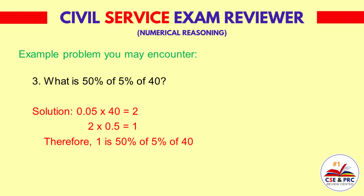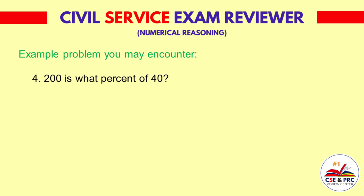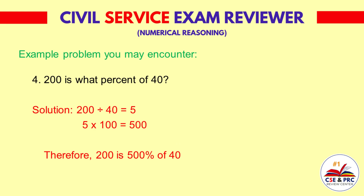That equals 1. Therefore, 1 is 50 percent of 5 percent of 40. Number 4: 200 is what percent of 40? Solution: 200 divided by 40 is equal to 5. 5 times 100 is equal to 500. Therefore, 200 is 500 percent of 40.